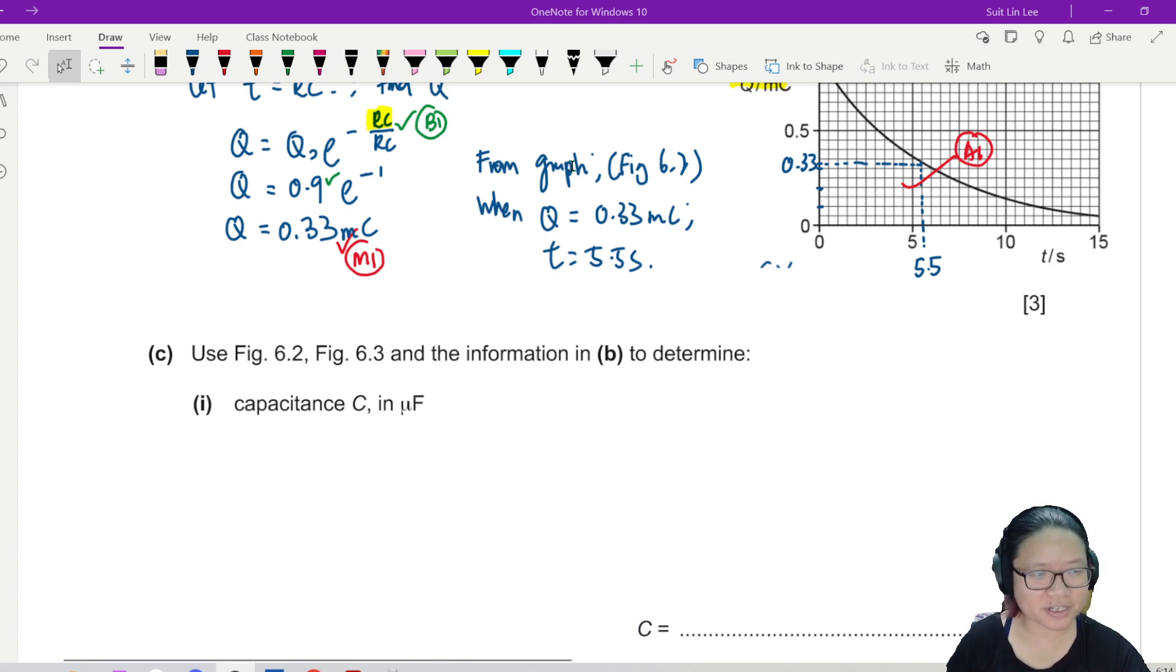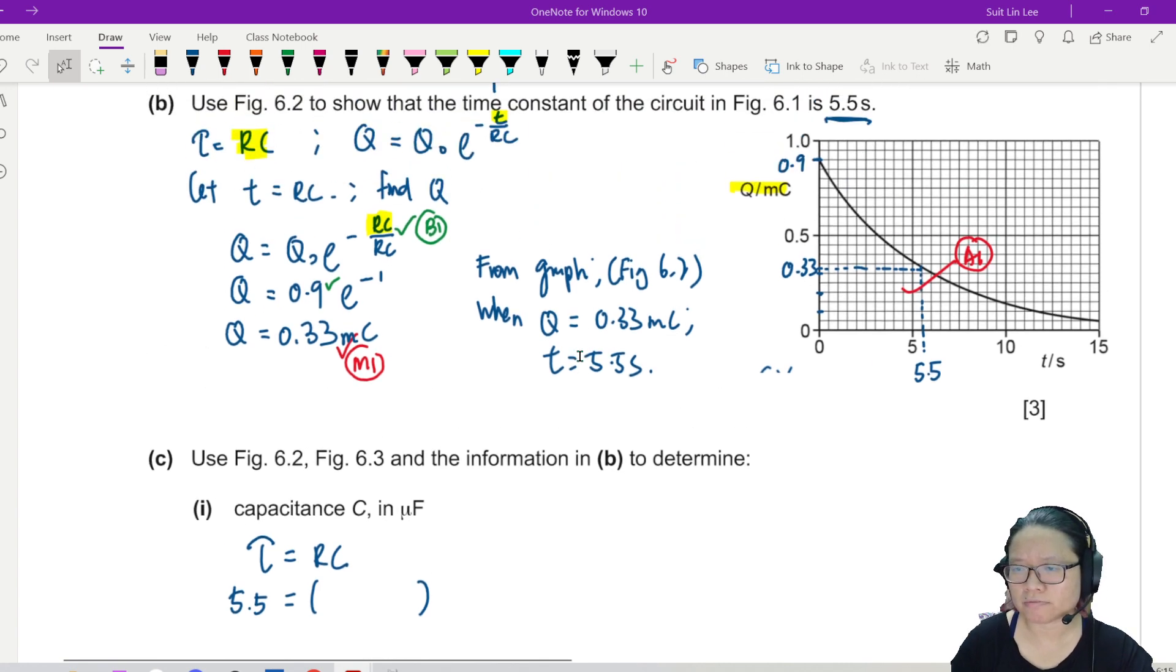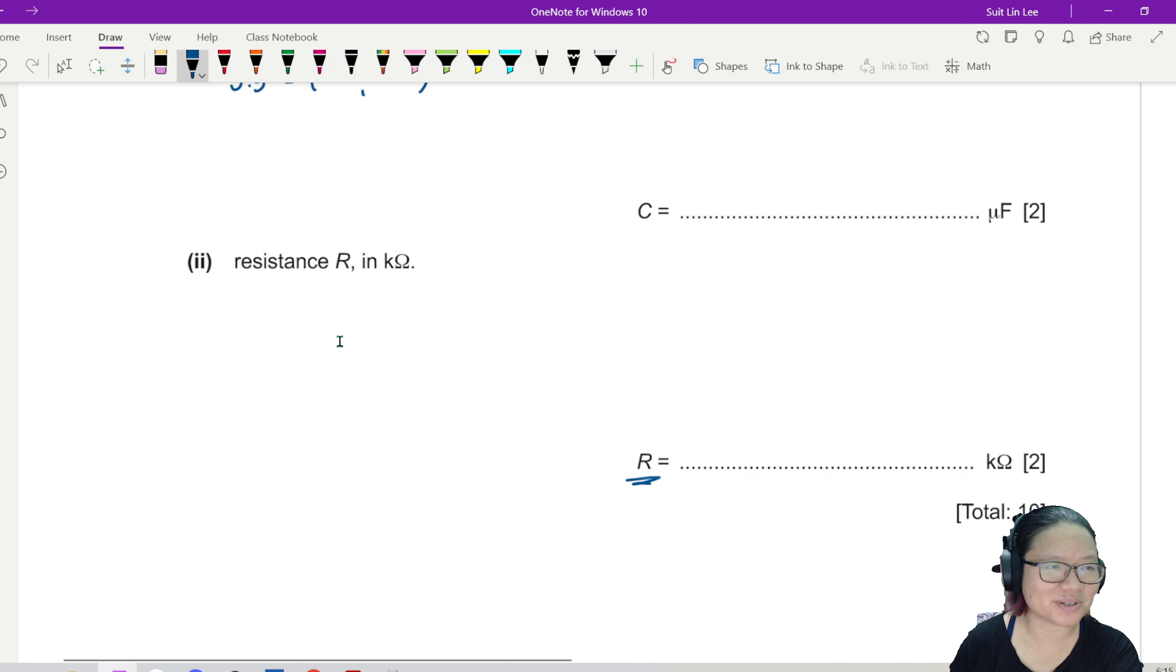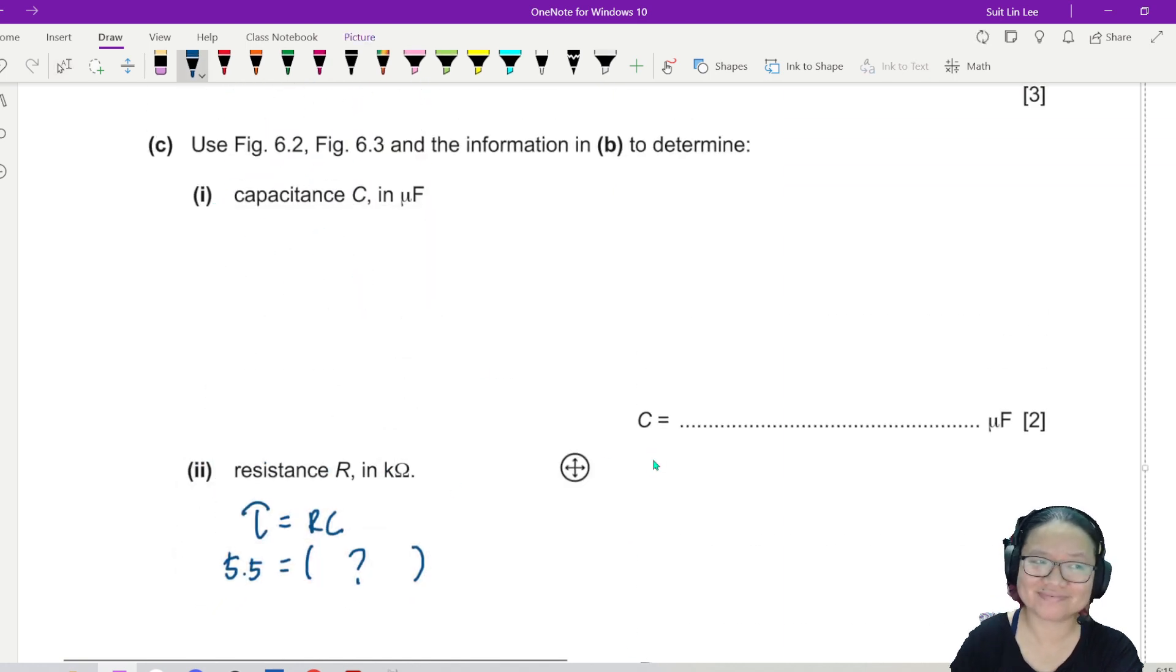Okay. Part C. Use figure 6.2 and 6.3 and the information in b to determine the capacitance in microfarads. Well, the time constant is with us. We know this is 5.5. Do we know the resistance? Do we know the capacitance? Let's say you want to do this. Do we know the resistance? Don't know. In fact, normally in the example, you don't know the resistance. Oh, they want us to find resistance. Meaning this working is supposed to be here. So what are the other ways to find capacitance? Don't forget your good old Q = CV.